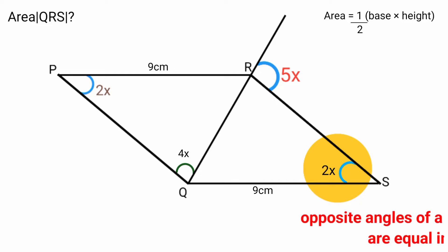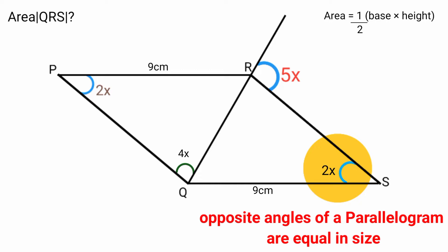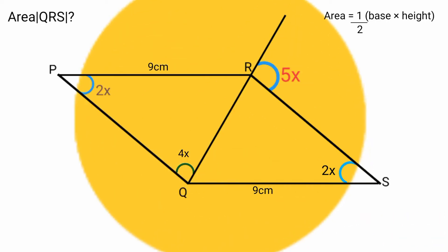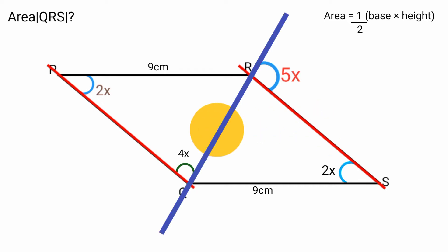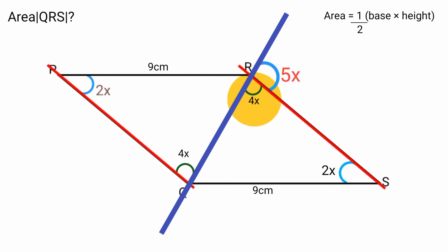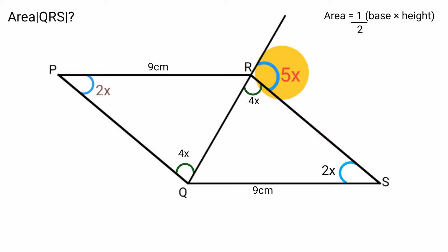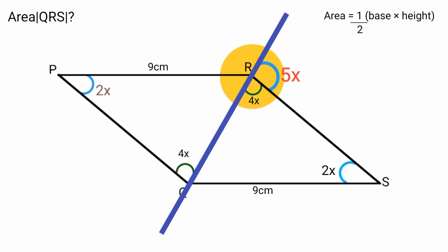Since angle PQR is 2x, the opposite angle PSR must also be 2x because opposite angles of a parallelogram are equal. Also, since PQ and SR are parallel and line QR is a transversal intersecting both, the alternate angles are equal — so this angle is also 4x.